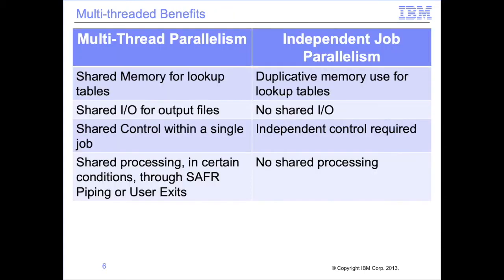Multi-threaded parallelism can provide certain benefits over multi-job parallelism. These benefits include shared memory — only one copy of the reference data to be joined must be loaded into memory, and all subtasks can efficiently access the memory resident tables. Shared I/O: data from multiple input files can be written to a single extract file for that view. Shared control: only one job needs to be controlled and monitored. Shared processing: in certain cases, data may be shared between threads through the use of SAFR piping and exit processing.